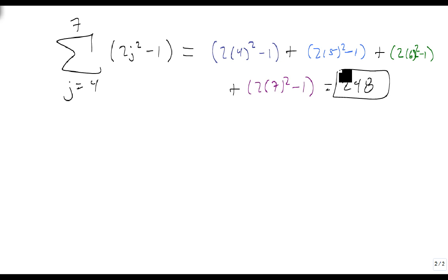And so that's how we evaluate sums. Start at the beginning at the lower bound, increase by 1 each time until you get to the upper bound, and then just evaluate and add together all of your results.